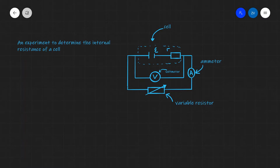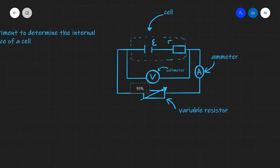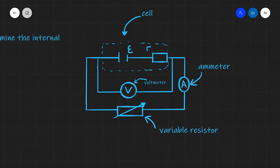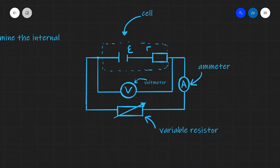Today we're going to be looking at an experiment to determine the internal resistance of a cell. We have a cell which can be represented as a source of EMF with some internal resistance R, connected to a variable resistor. We also have an ammeter in series in the circuit and a voltmeter to measure the terminal PD across the cell.